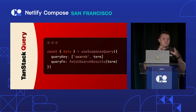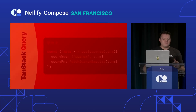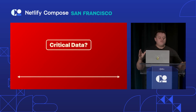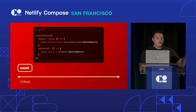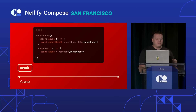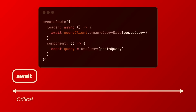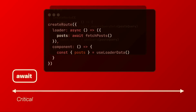This is just one piece of the spectrum of data fetching you can do with this setup. Do you need your data for the initial response — is it critical data? You can await it. Call ensureQueryData and then useQuery, and it will be there before you even render. Or you can do that right in the router without TanStack Query.